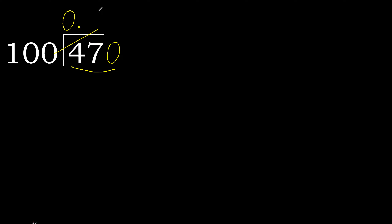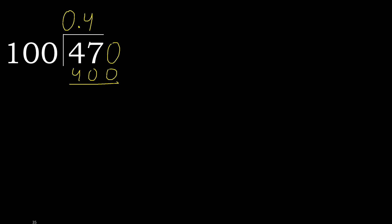100 multiplied by which number is nearest to 470 but not greater? 100 multiplied by 5 is 500 — that is greater. Multiplied by 4 is 400 — ok, that is not greater.